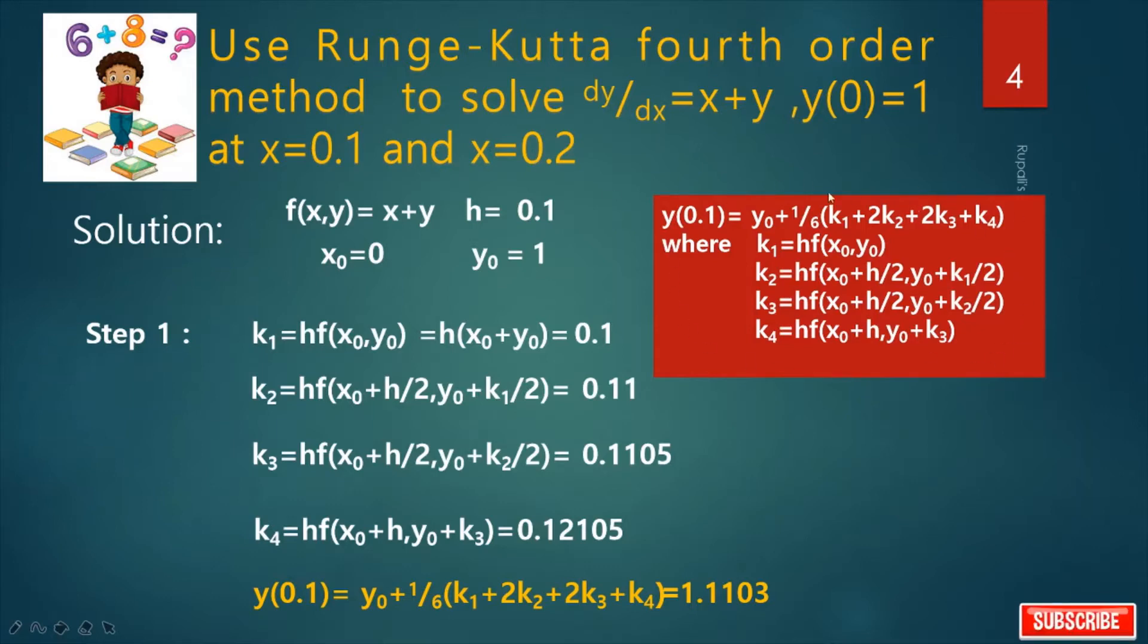This is the formula for RK4 method. We have to calculate the value of y(0.1). f(x,y), our function is x plus y, h is 0.1, x0 is initial value of x which is 0, and y0 is 1. By the formula we calculate the value of K1, K2, K3, and K4.